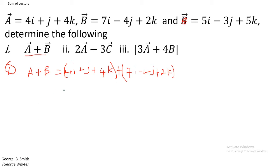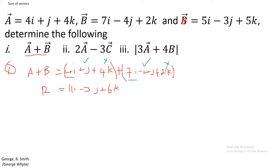Adding component by component: for the i-components, 4 plus 7 gives us 11i. For the j-components, 1j minus 4j gives us minus 3j. For the k-components, 4k plus 2k gives us 6k. So the resultant of A and B, which we can call R, equals 11i minus 3j plus 6k.